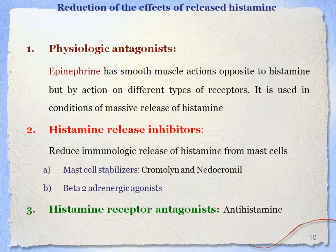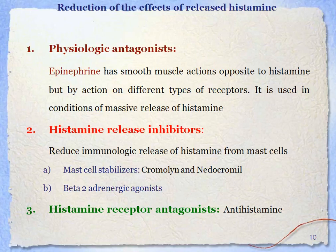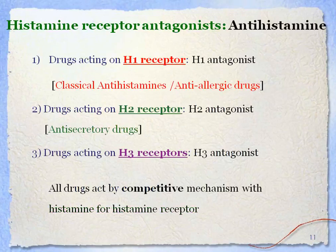Antihistamines act by three mechanisms. First, physiological antagonists such as ephedrine and adrenaline show opposite actions to histamine. Second, histamine release inhibitors — agents that stop the release of histamine from mast cells — include mast cell stabilizers and beta-2-adrenergic agonists. Third, and most important for the final year syllabus, are histamine receptor antagonists, which act against three receptors: H1 blockers, H2 blockers, and H3 blockers.